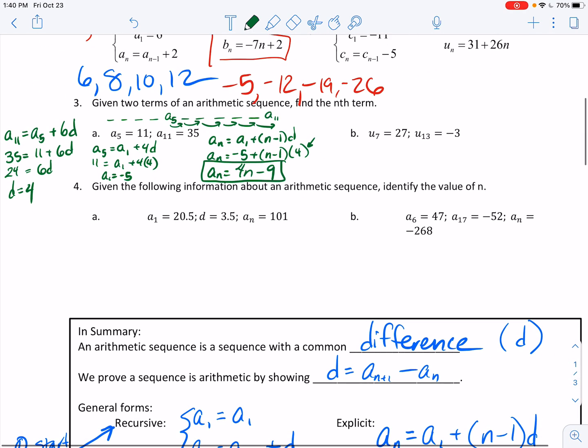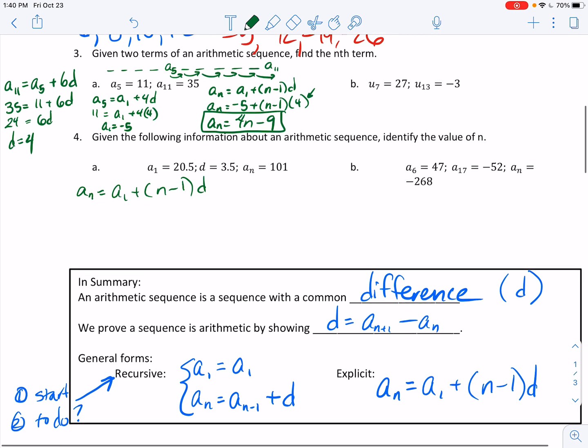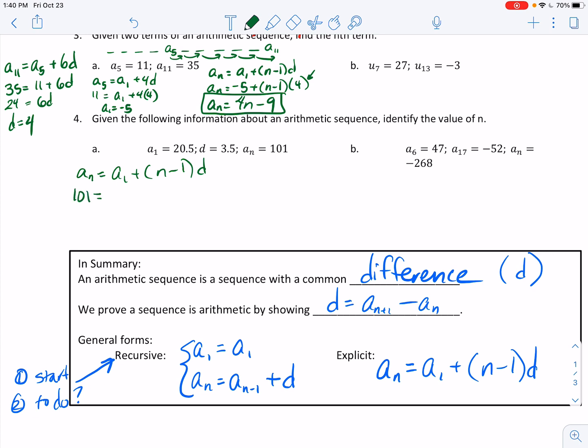Sometimes they tell you what the term value is, but they don't tell you what term it is. So we know that we're trying to figure out what n is here. So we just said that A sub n is equal to A sub 1 plus n minus 1 times d. So that is 101 is equal to 20.5 plus n minus 1 times d, 3.5. Subtract 20.5. That's 80. And then I'm going to divide that number by 3.5. And so I have 23 is equal to n minus 1. So I just need to add 1. And so that happened to be the 24th term of that sequence.